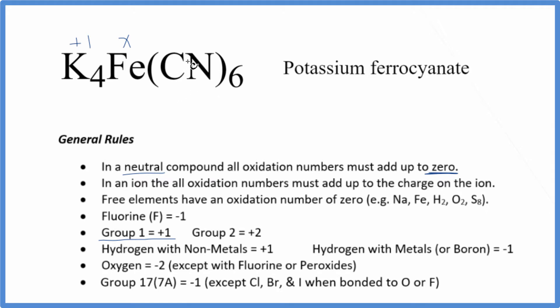Then we get to the cyanide, the C and N. This is a little bit of a challenge because carbon and nitrogen don't show up on our list. What we need to recognize is that this is called the cyanide ion. The whole cyanide ion has an ionic charge of one minus.